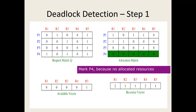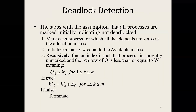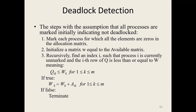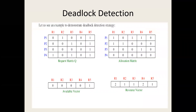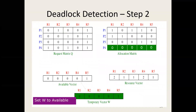Then what we do is we initiate a matrix called W, equal to the available matrix. So we have a matrix W equivalent to the available matrix.